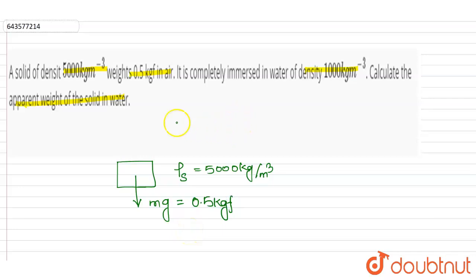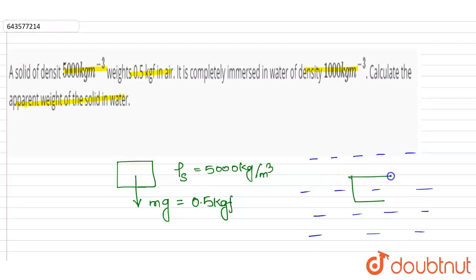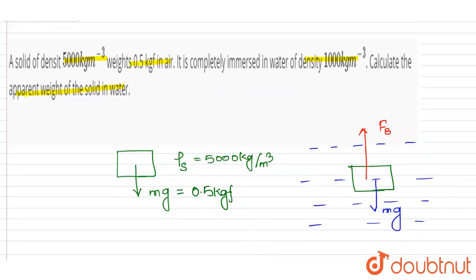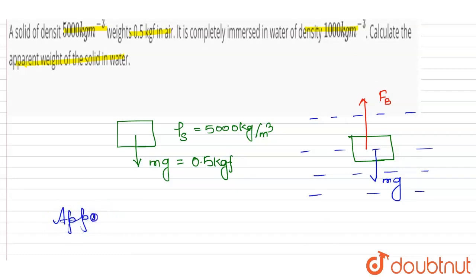Now we have to find the apparent weight. Let's suppose this mass is immersed in water. This mass will experience an upthrust — the upward force called buoyancy force, Fb. And it will also have its own weight, mg, vertically downward. So the apparent weight will be equal to mg, that is weight in air, minus buoyancy force Fb.